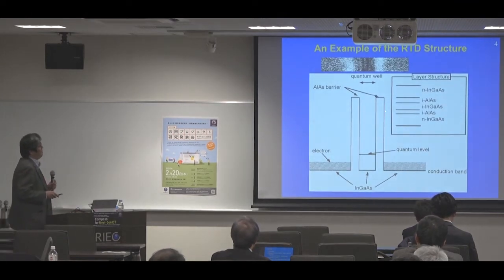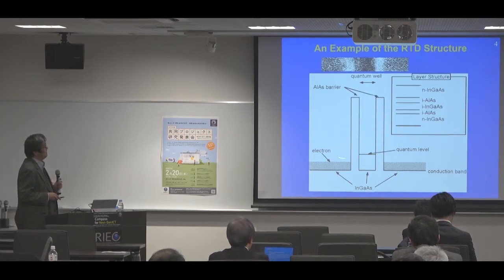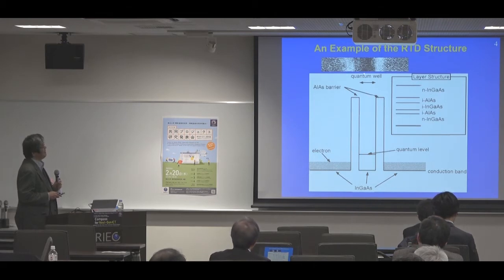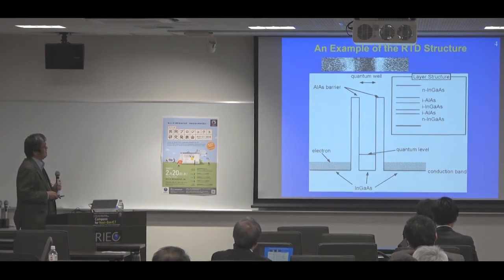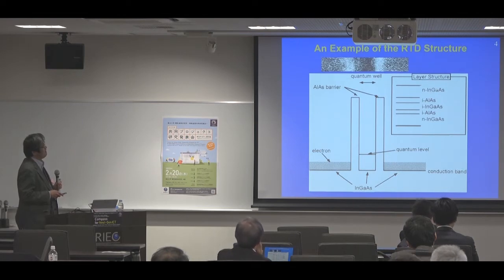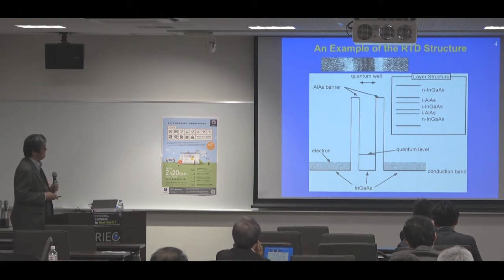This is the basic structure of resonatomic diodes, showing the conduction band diagram and a transmission electron microscopy image of the structure. The RTD consists of narrow band gap and wide band gap semiconductors. Typically it is made of indium gallium arsenide and the aluminum arsenide material system on an indium phosphide substrate.